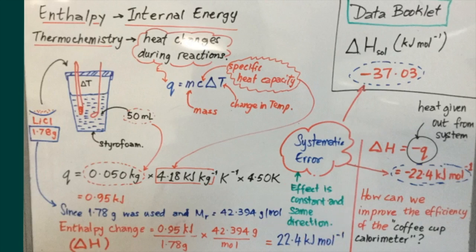This type of error is described as a systematic error, for the effect is constant and always in the same direction. The value that you get for the enthalpy change from the coffee cup calorimeter will always be less than the actual value, and the percentage error for each time should be relatively consistent, meaning that the effect is constant and in the same direction.